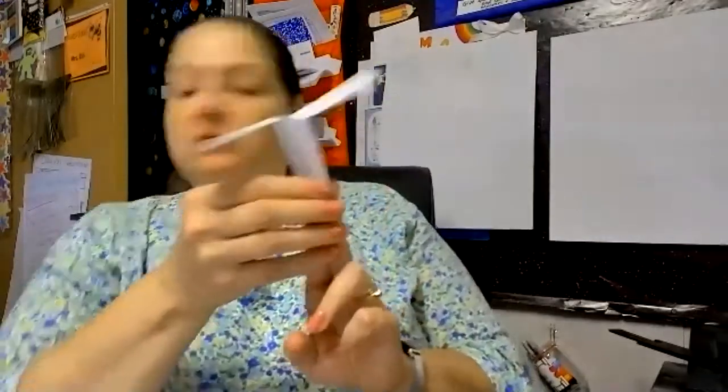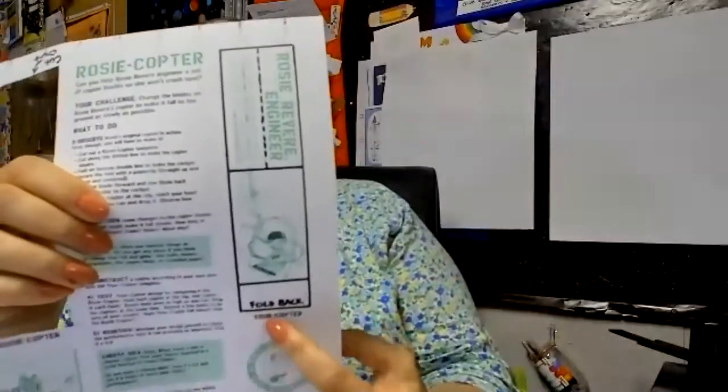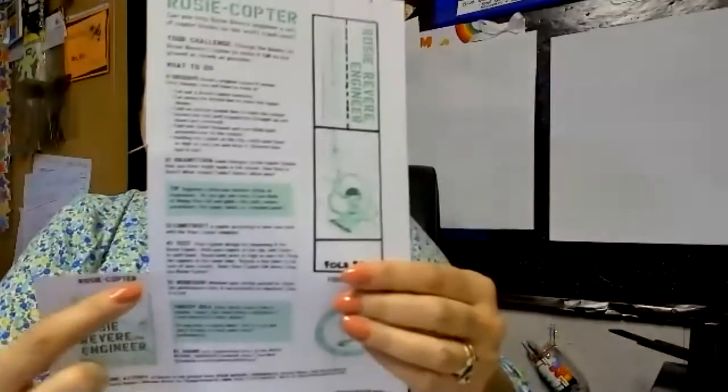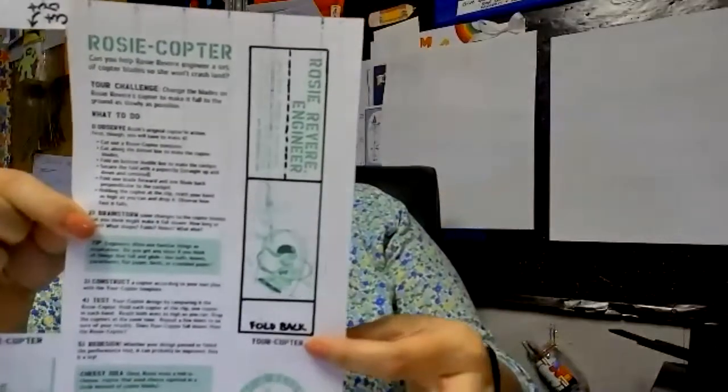So let's see if you notice the other side of your sheet says this is your copter. This side was Rosie's copter and this side is your copter. So what you're going to do is you are going to think about some changes that you can make to those helicopter blades.